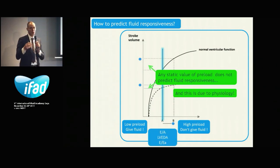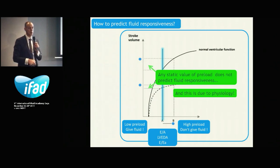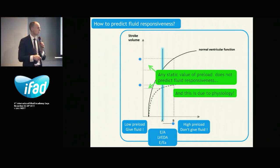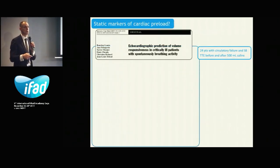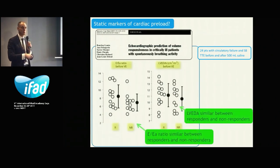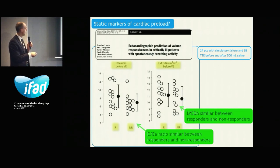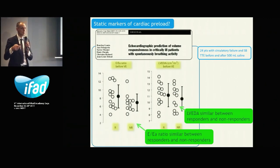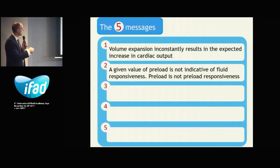With echo, the static markers of preload include the E/A ratio, the left ventricular end-diastolic area, and perhaps the best one, the E/E' ratio. All these values in any patient do not allow prediction of fluid responsiveness, as demonstrated by many studies. For instance, in one study where patients received fluid and were divided into responders and non-responders, the E/E' ratio and left ventricular end-diastolic area were similar between groups. Do not use CVP or E/E' ratio to predict fluid responsiveness.